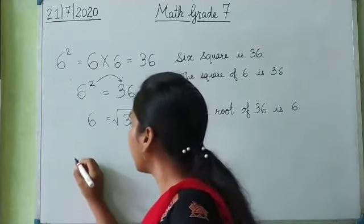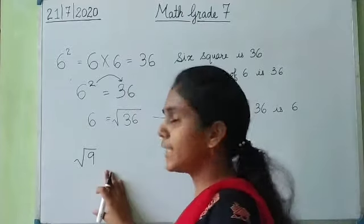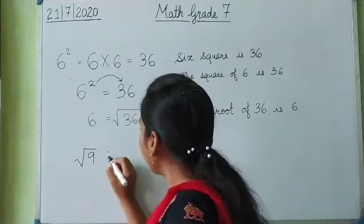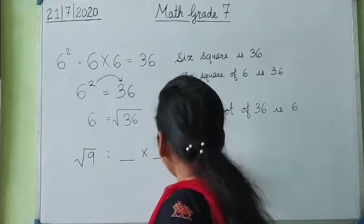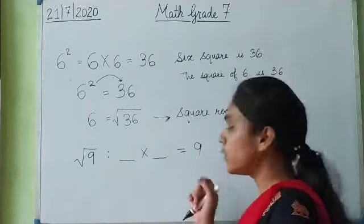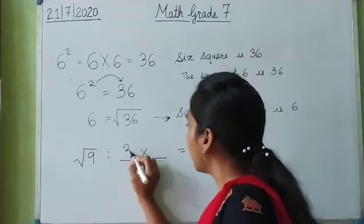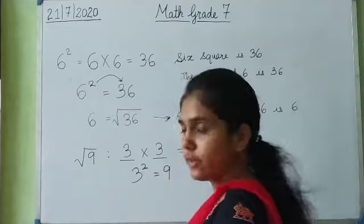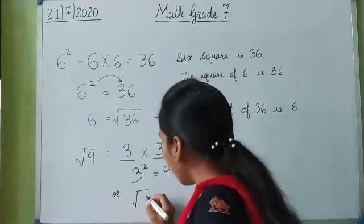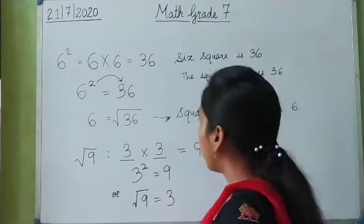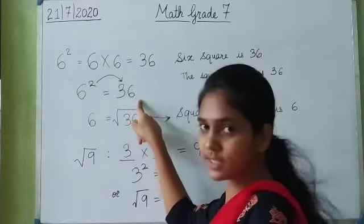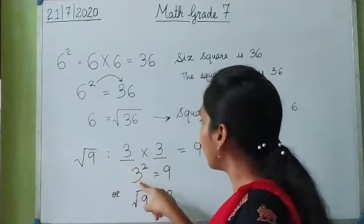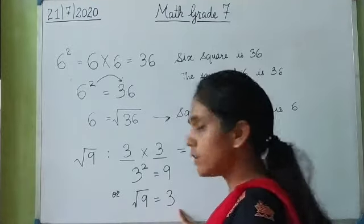Similarly, if I have to find the square root of 9, I need to check which number multiplied by itself will give me 9. Which number multiplied by itself equals 9? It is 3. 3 multiplied by 3 is equal to 9. So we say 3 square is equal to 9, or we can write this as square root of 9 is equal to 3. So 6 square is 36 and square root of 36 is 6; similarly, 3 square is 9 and square root of 9 is 3.